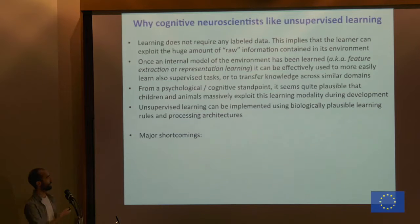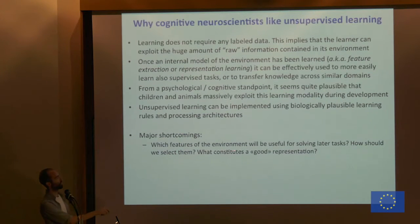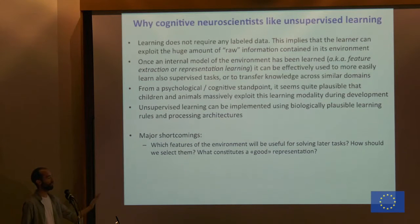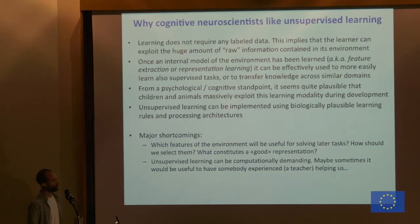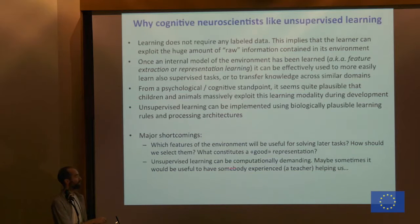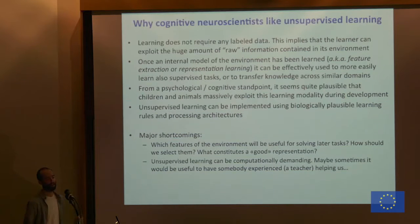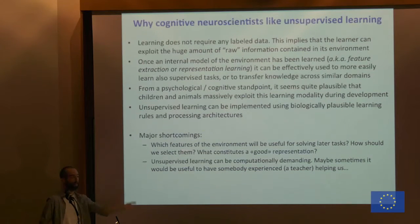Unsupervised learning also has major shortcomings. We don't know which features will be useful — we extract features, but which features? Maybe we are extracting features that are not useful for later tasks. What constitutes a good representation is a challenging question. Also, unsupervised learning sometimes needs a lot of data and is computationally demanding. Sometimes we have someone with better experience — a teacher — who can help us. Supervised learning is useful especially if we have a teaching system, as in human society, where others have discovered things before and can communicate the correct category to you.